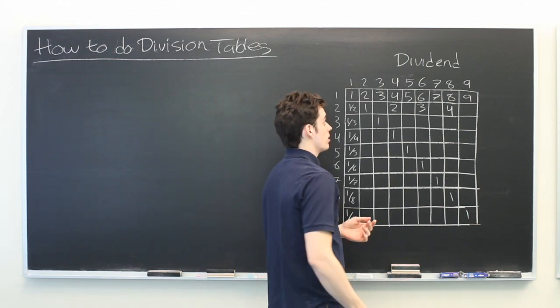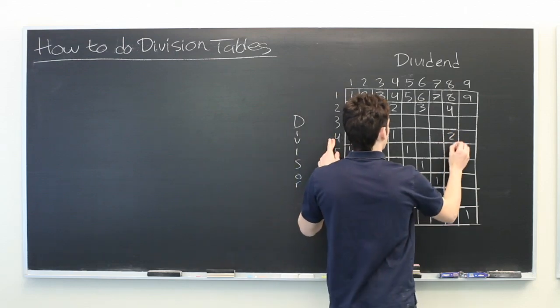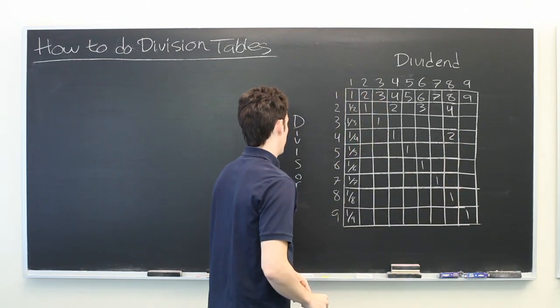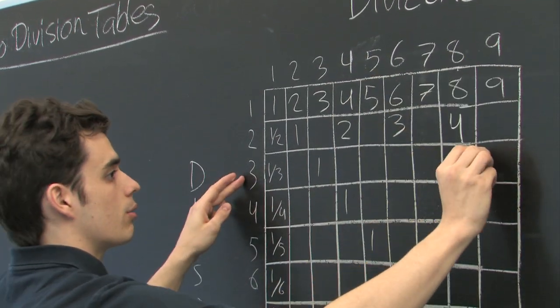Let's look for some other numbers that might be easy. We know that eight divided by four is two. We know that nine divided by three is three.